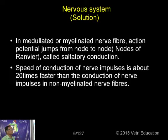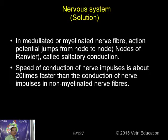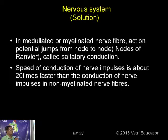In myelinated nerve fiber, the action potential jumps — it is conducted by saltatory conduction. In non-myelinated nerve fiber, it is conducted in the form of streaming movement. When you have the outer covering called the medullary sheath, impulses are conducted by jumping movement — saltatory conduction.